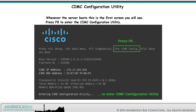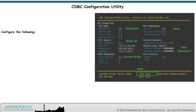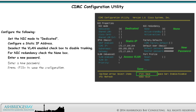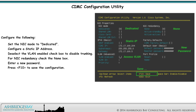When the server boots, this is the first screen you will see. Press F8 to enter the CIMC configuration utility. Use the configuration utility to configure the following: set the NIC mode to dedicated; configure a static IP address; deselect the VLAN-enabled checkbox to disable trunking; for NIC redundancy, check the none box; enter a new password; and press F10 to save the configuration.